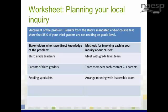Here we have a worksheet that can help you plan your inquiry. You'll notice at the top that we've stated the problem — and it's very important to get a statement that you and others you might be working with can agree upon. So we've said that results from the state's mandated end-of-course test show that 35% of third graders are not reading on grade level. We've clearly defined the problem and as a team have begun to identify stakeholders who have direct knowledge that may be helpful in identifying causes: the third grade teachers, parents of third graders, and possibly reading specialists who work with students in small groups or one-on-one and see the problem on a daily basis with perhaps a different perspective from the classroom teachers.